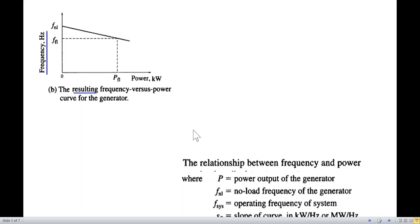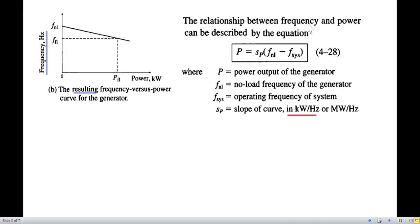In the book, the relation between frequency and power is given by this equation. And this is similar to y equals mx plus c, or y equals mx, the line equation. Here, p is the power output of the generator. No load is the no load frequency. Then f system or f operating is the frequency lower than this. And then the slope of the curve, this curve slope is kilowatt per hertz.